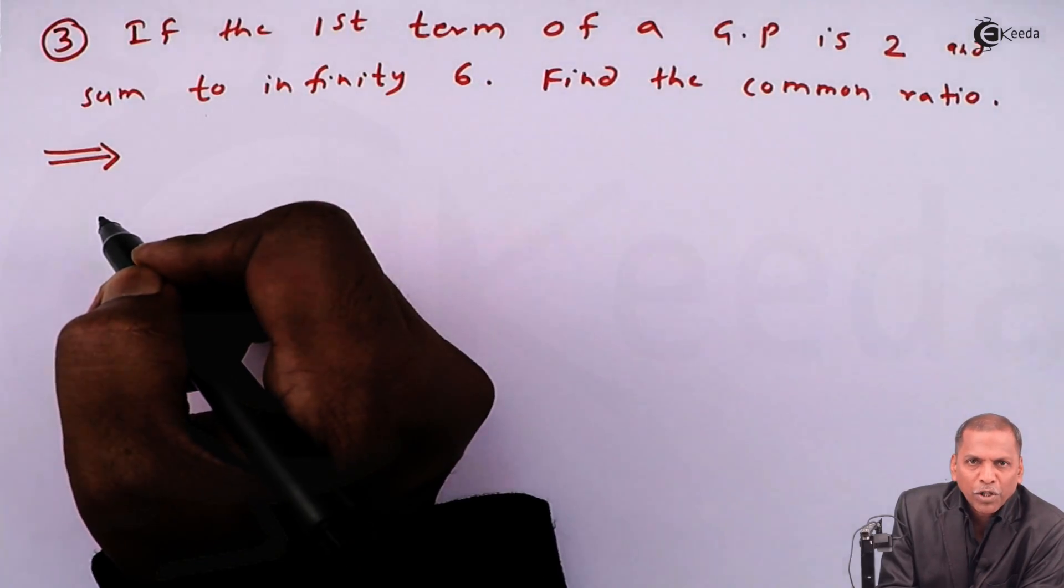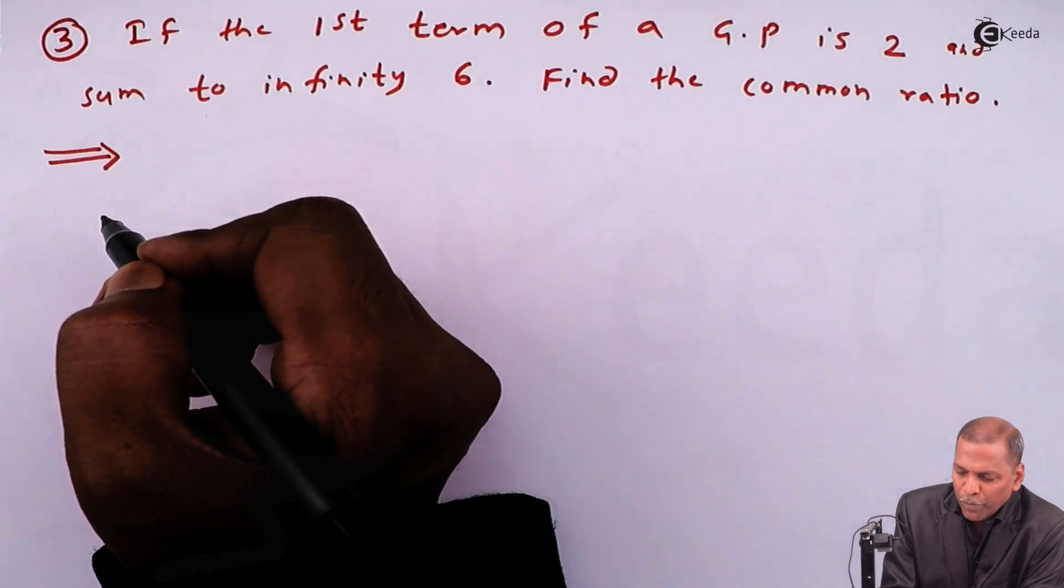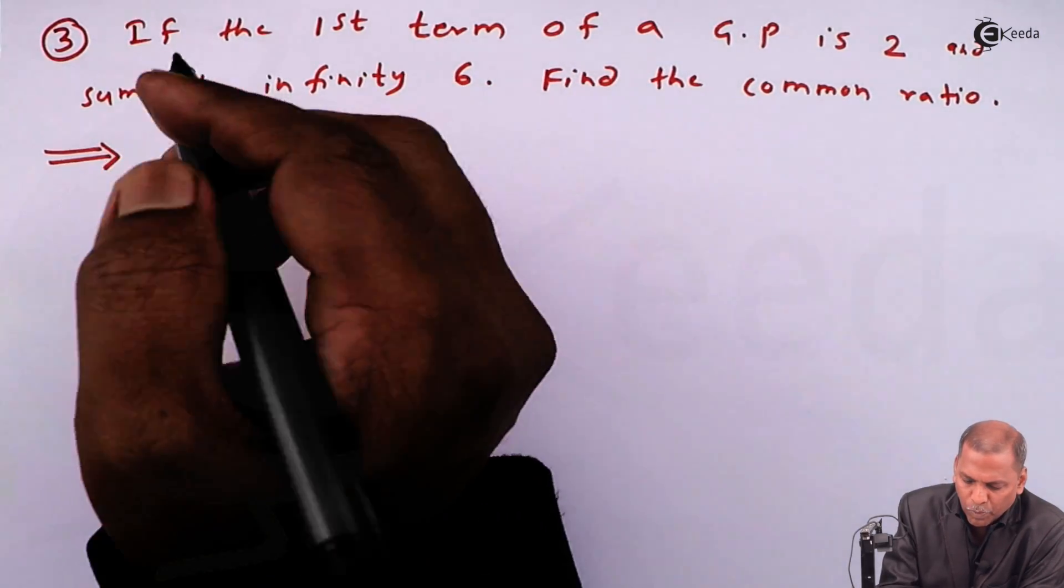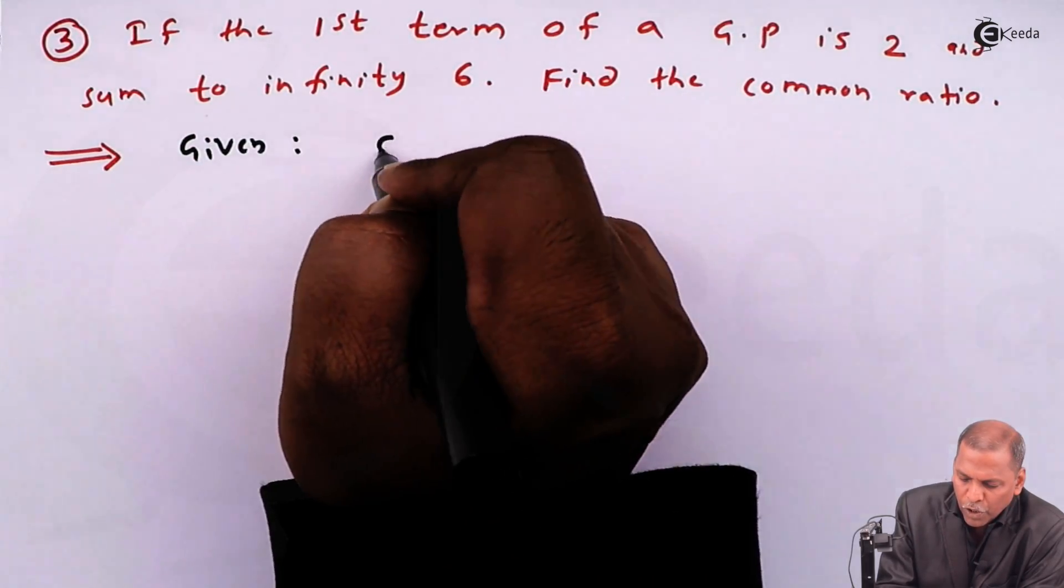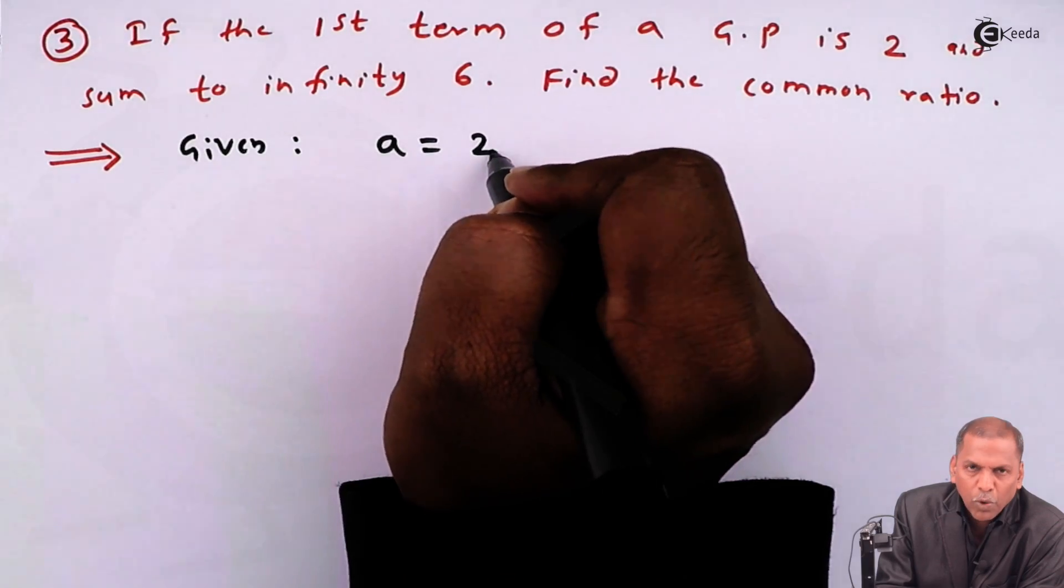Now, in this question, the first term of a GP given as two, it means given first term a is equal to two.